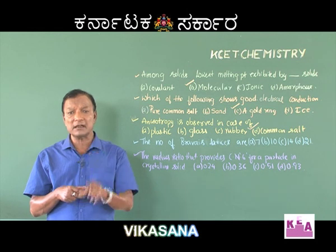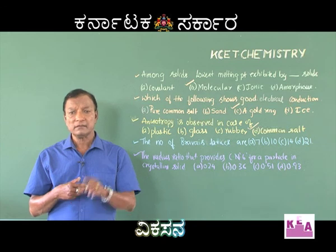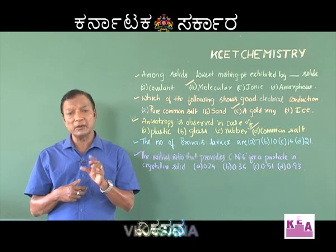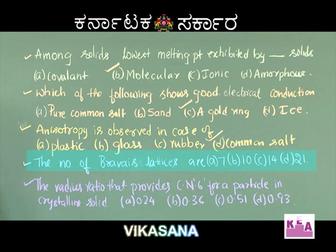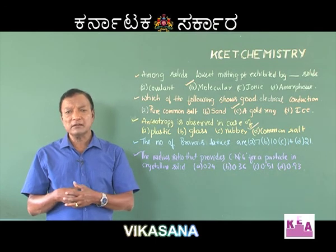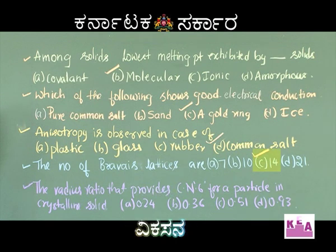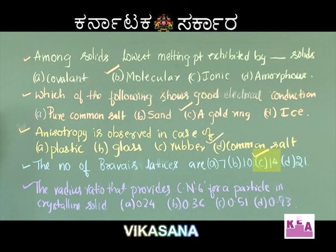These 14 space lattices are called the Bravais lattices. The question becomes simple: the number of Bravais lattices is 7, 10, 14, or 21? Immediately, we select option C, reading 14, because there are 14 Bravais lattices built up from 7 crystal systems.